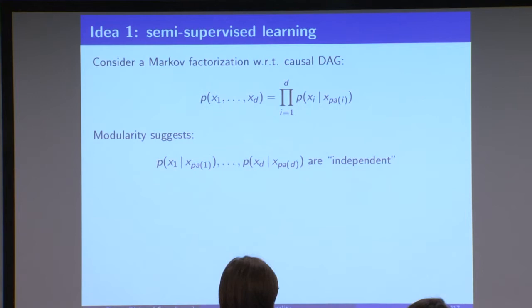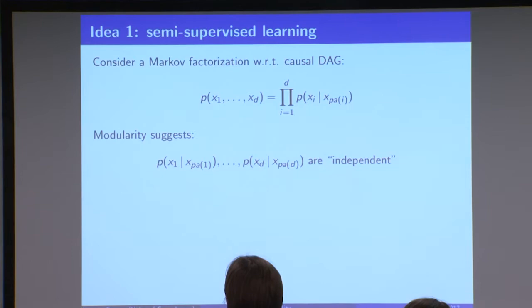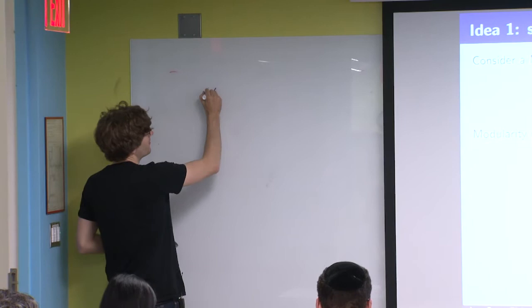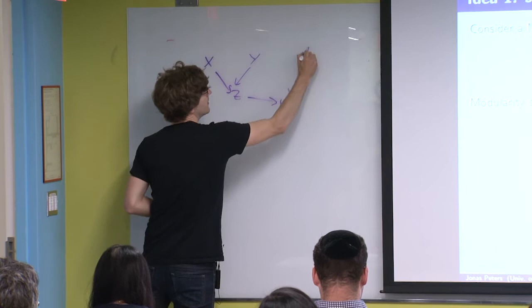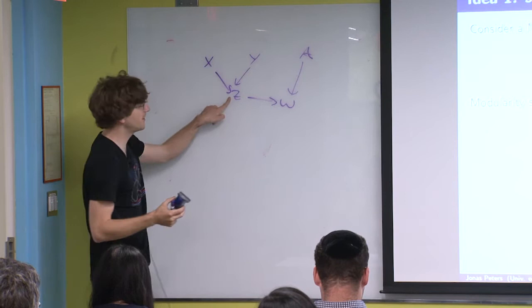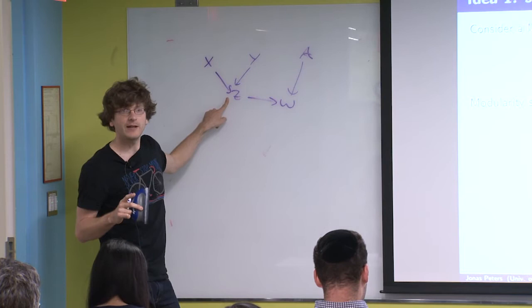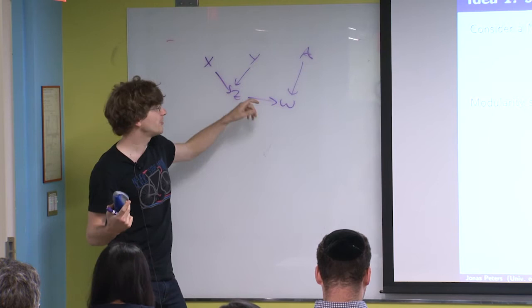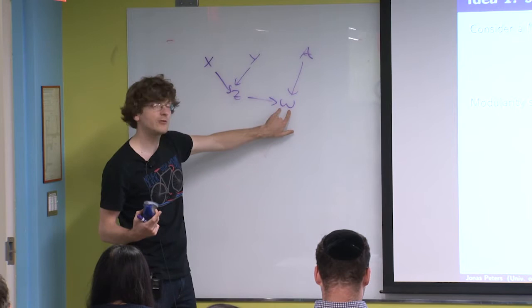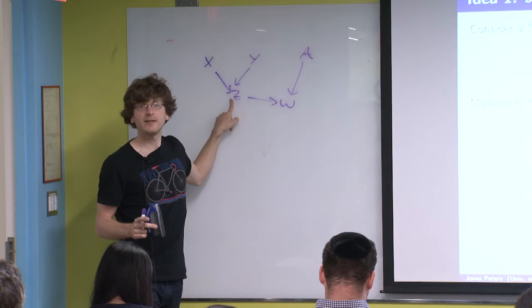If you have a causal model — say a graph — and we looked at interventions: what happens to the system if we intervene on one variable? The assumption of modularity says when you are intervening here, you are not intervening anywhere else. So you are replacing the structural equation for z, but you are not changing anything else at the same time. This means the way w depends on z and a remains exactly the same no matter whether I intervene on z or not. This is called modularity.